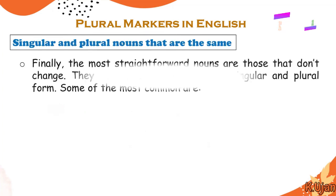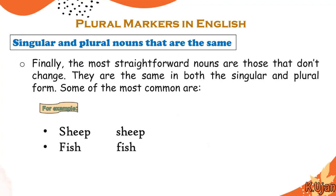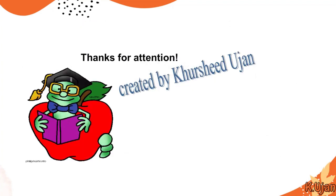There are also singular and plural nouns that are the same. For example: sheep — singular sheep, plural sheep. Fish — singular fish, plural fish (though fishes can refer to different kinds). Other examples include means/means, species/species, series/series, deer/deer.